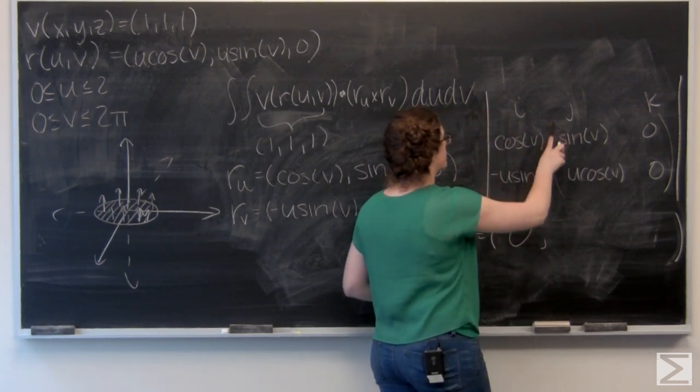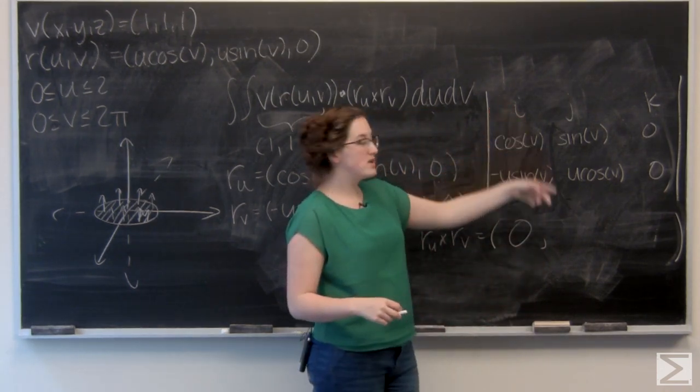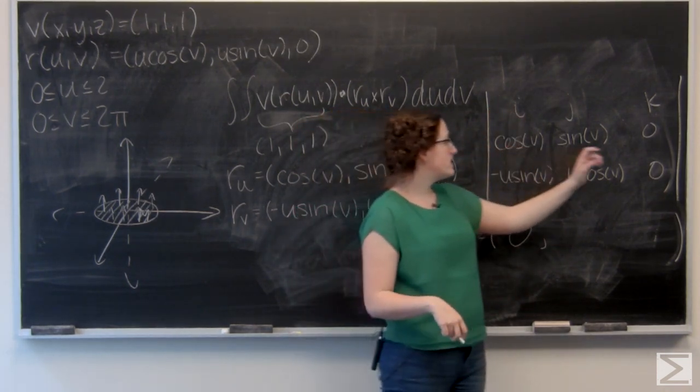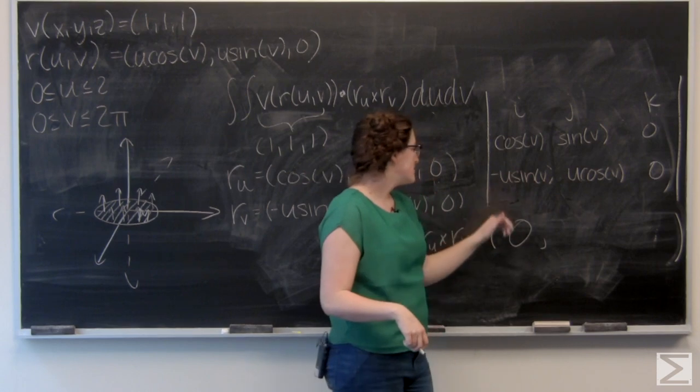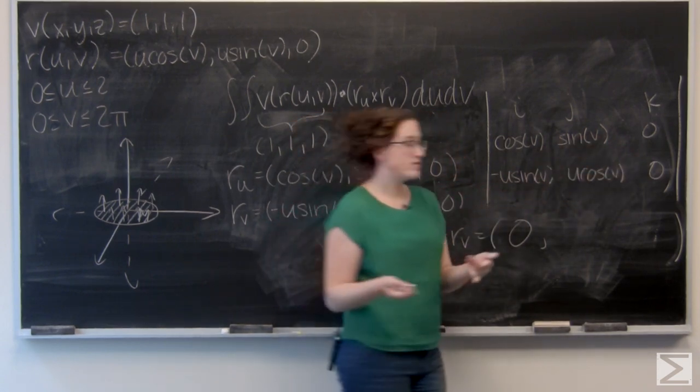Now let's look at j. So again, cut the top column, and now cut the middle row. I've got cosine of v times zero, plus u sine of v times zero, so the j component's zero as well.